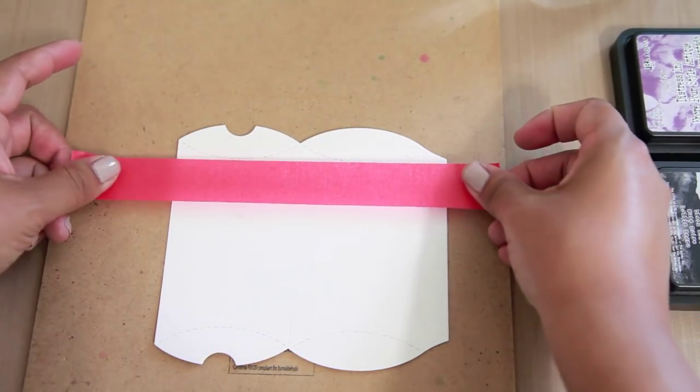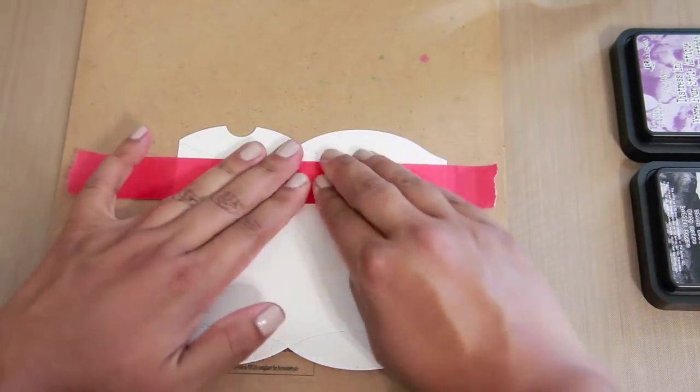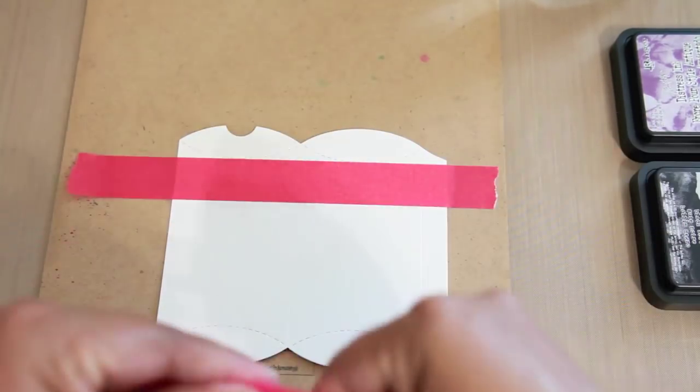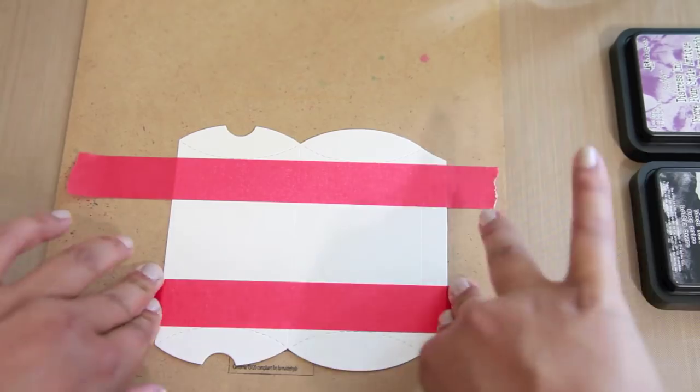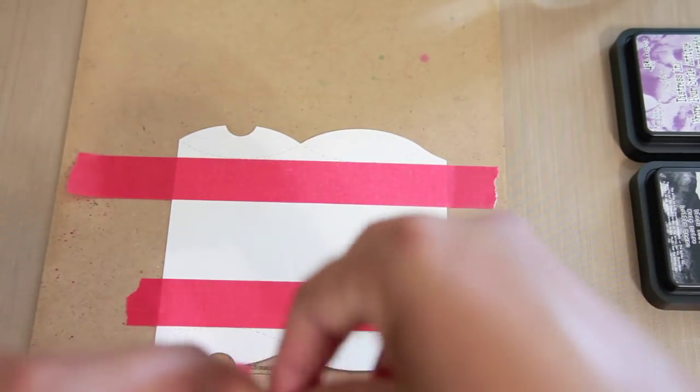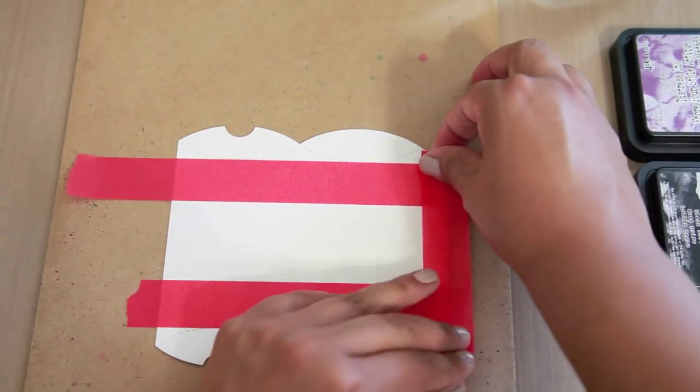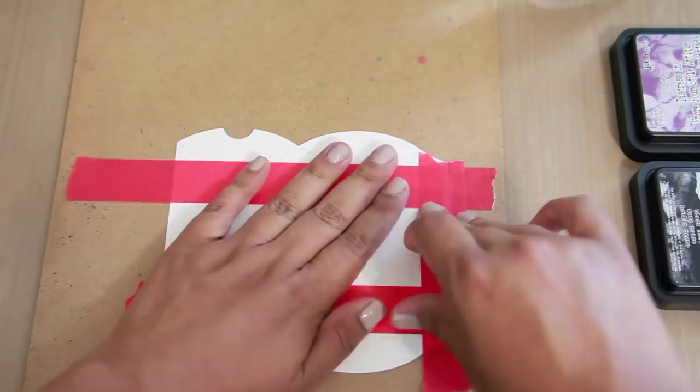So what I'm going to do is take some low tack tape here and I'm just going to mask off a little bit because I just want a little strip of watercolor. I didn't want the watercolor to be all over the place all over the pillow box because I just thought it would look a little bit cleaner if I was to do it this way.